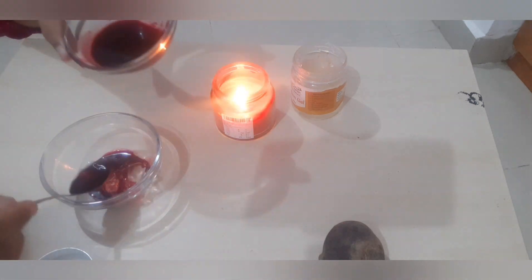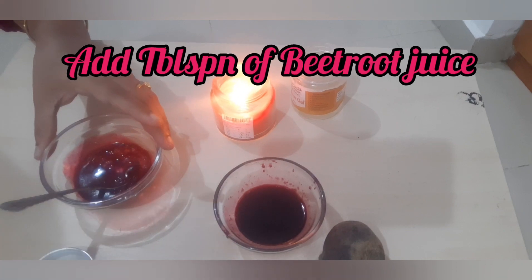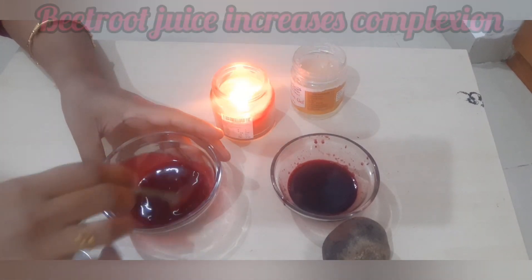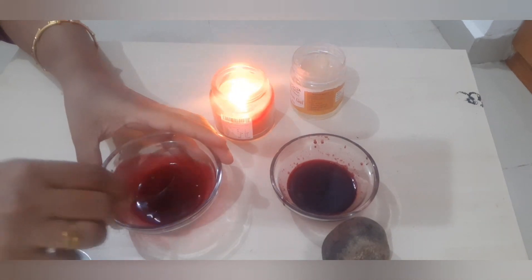Now add 2 tablespoons of beetroot juice. This will help improve your skin complexion and give you a very glossy and glowing look.